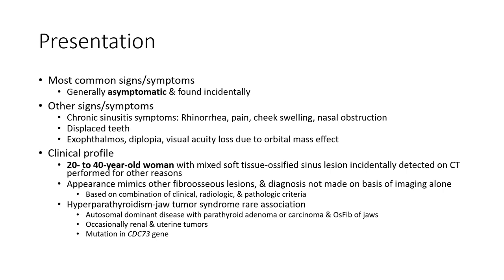Hyperparathyroidism-jaw tumor syndrome is an autosomal dominant disease with parathyroid adenoma or carcinoma and ossifying fibroma of the jaw, with occasional renal and uterine tumors. It is associated with mutation in the CDC73 gene.